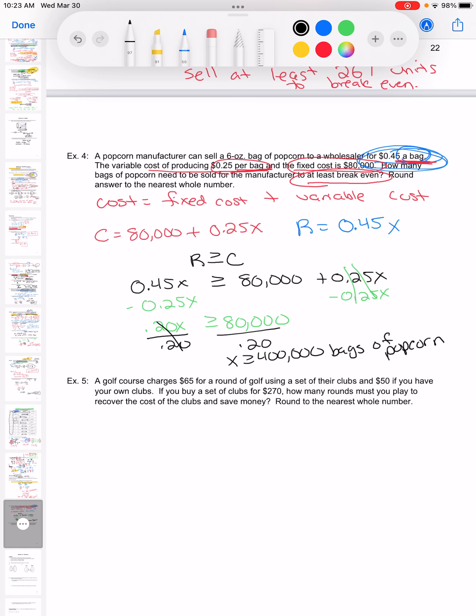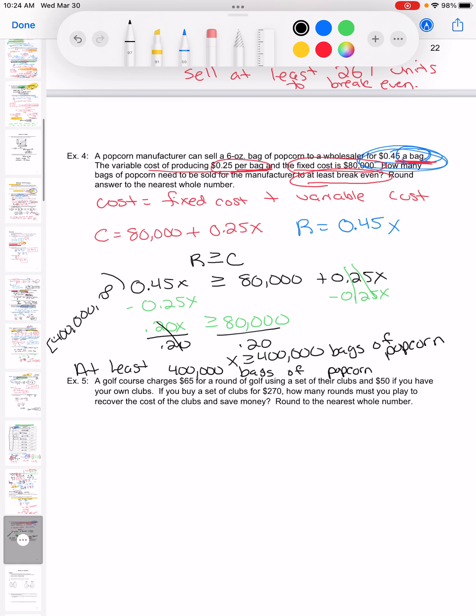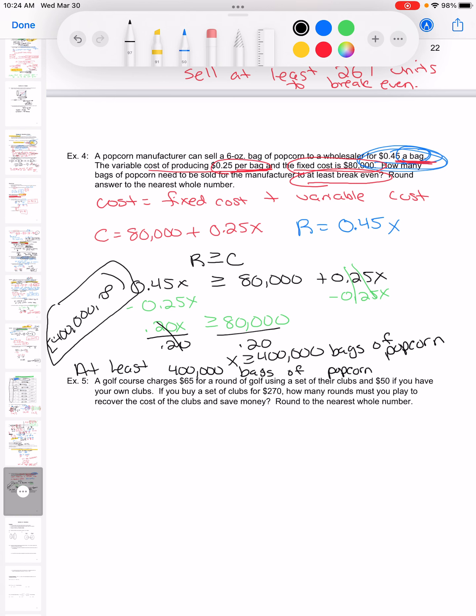So x is 400,000 bags of popcorn. 400,000 would have me break-even - I would be making as much money as I'm getting out. So I would need to sell at least 400,000 bags of popcorn. 400,000 would mean I'm even, so more than that I'll make a profit. As an inequality, I would write that as a bracket because it has the equal to, to infinity. Let me take out that comma so we don't have as many of them - sometimes that can get confusing.